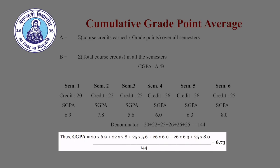CBCS uses Cumulative Grade Point Average (CGPA) to express the overall result of a student in a particular program. To calculate CGPA, the numerator is the sum of the product of SGPA and its corresponding total credits for each semester — for example, semester 1: 6.9 multiplied by 20, plus semester 2: 7.8 multiplied by 22, and so on. The denominator is the sum of credits of the entire program, which in our case is 144. Thus, the CGPA is 6.73, which represents the overall result of the student in that particular program.